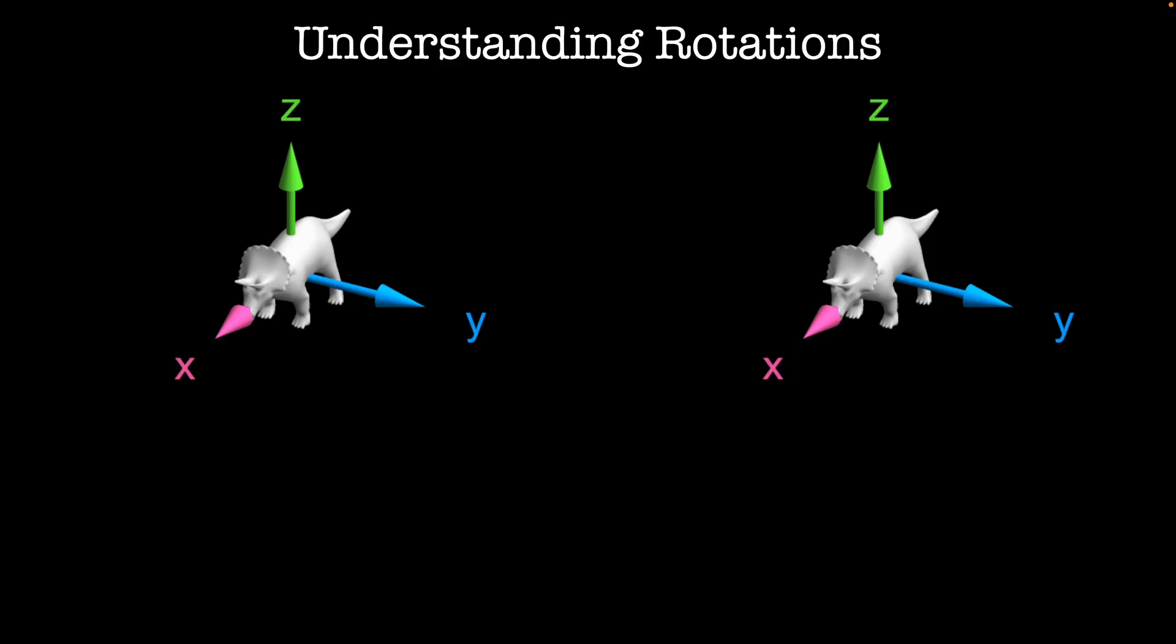Hello, and welcome to Classical Mechanics 2. In this video, we'll look at two different ways people represent the rotational state of a 3D body, Euler angles and quaternions.